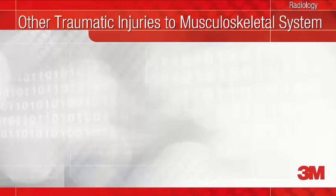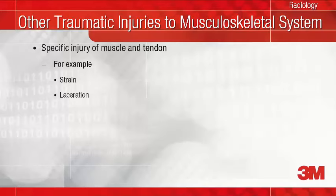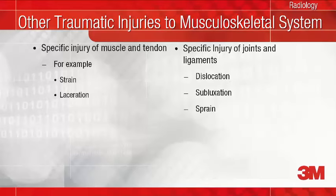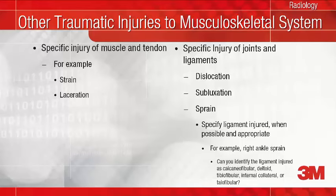ICD-10 differentiates other injuries of the musculoskeletal system by type, such as contusion, laceration, dislocation, subluxation, sprain, and strain. In each case, additional detail should be documented for site and, in most cases, laterality. Take, for example, a sprain of the right ankle. Determine if you can further identify the specific ligament injured, such as calcaneofibular, deltoid, tibiofibular, internal collateral, or talofibular. If so, document 'sprain of right calcaneofibular ligament of the right ankle,' for example, rather than 'right ankle sprain.'